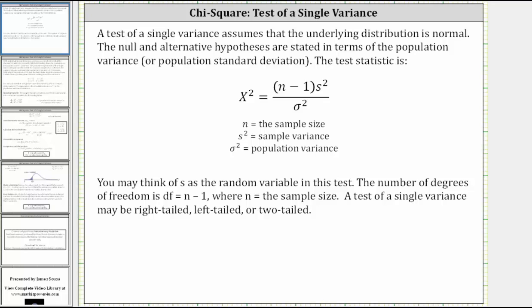Welcome to a lesson on a test of a single variance using the chi-square distribution. A test of a single variance assumes that the underlying distribution is normal. The null and alternative hypotheses are stated in terms of the population variance or the population standard deviation. The test statistic is chi-square, which is equal to the product of n minus one and the sample variance divided by the population variance.